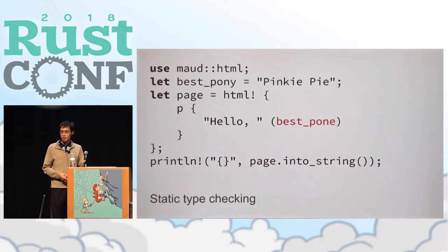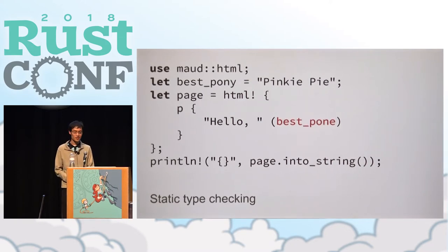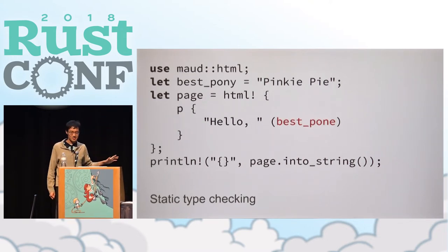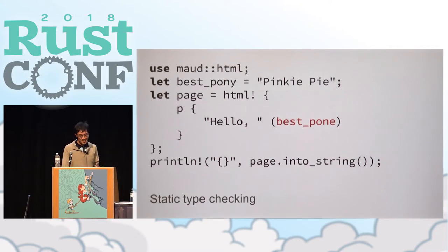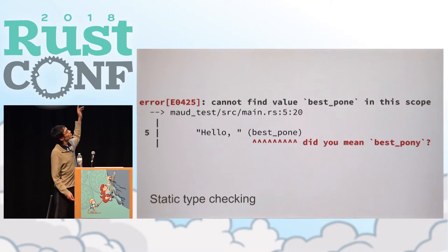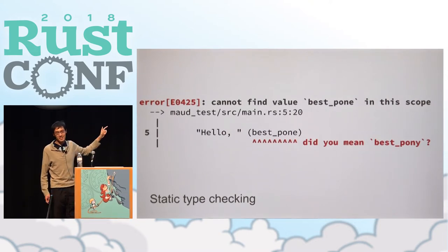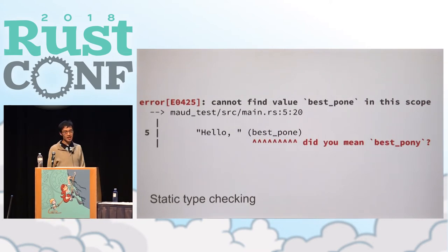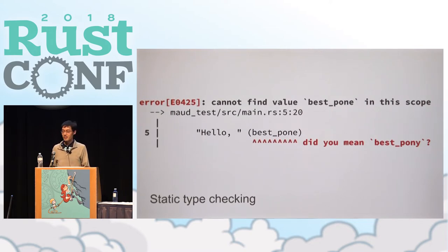Another advantage of Maud is static type checking, and I think this is the more important advantage. The compiler wouldn't let us run code with a typo, and in fact this is the exact same error you would have gotten if you had made that typo anywhere else — because at the end of the day we're just generating normal Rust. That is in comparison to other templating engines which parse and run templates at runtime, such that you wouldn't know about any typos until you try to run your app and everything falls down.